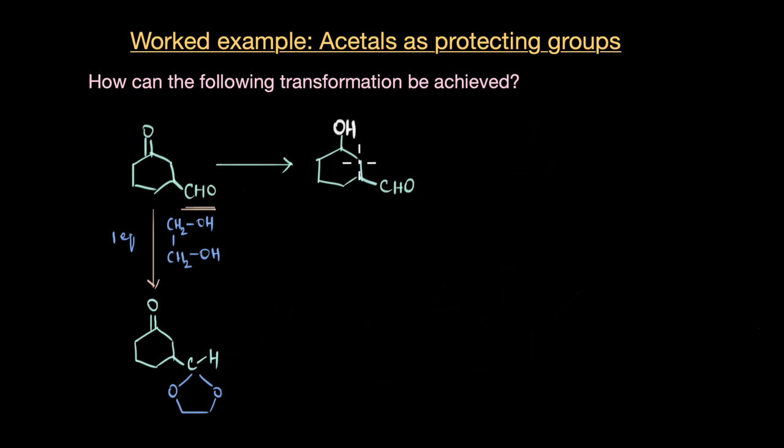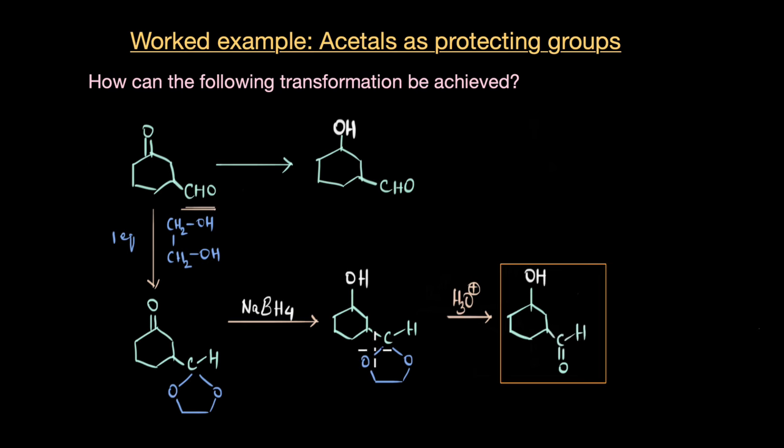And now, we can carry out a reduction reaction where the keto group can get reduced to secondary alcohol, right? And for that, you can employ any reducing agent like sodium borohydride or lithium aluminum hydride. And that would give us the secondary alcohol as you can see here. Now, to get this product, all we need to do is hydrolyze the acetal. So, acetal gets converted back to the aldehyde form and this is our final product.